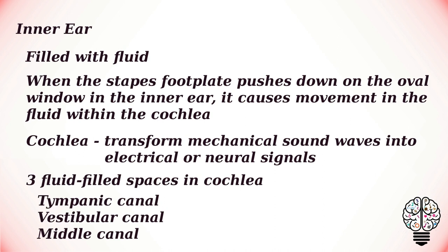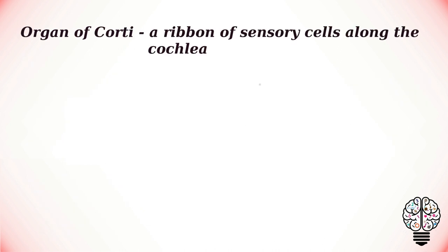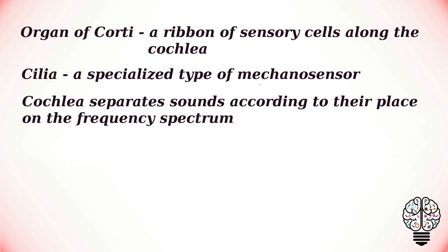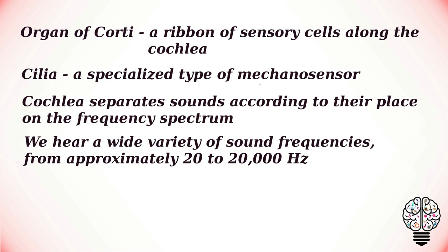Within the cochlea, there are three fluid-filled spaces: the tympanic canal, the vestibular canal and the middle canal. Fluid movement within these canals stimulates hair cells of the organ of Corti, a ribbon of sensory cells along the cochlea. These hair cells transform the fluid waves into electrical impulses using cilia, a specialized type of mechanosensor. The cochlea is the main sensory organ of hearing located in the inner ear, and it separates sounds according to their place on the frequency spectrum. Humans are able to hear a wide variety of sound frequencies from approximately 20 to 20,000 hertz.